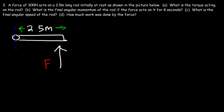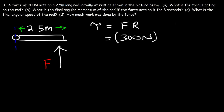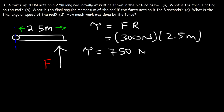Number 3: a force of 300 newtons acts on a 2.5 meter long rod, initially at rest, as shown in the picture below. What is the torque acting on the rod? The torque is the force times the lever arm. The force is 300 newtons and the lever arm, or moment arm, is 2.5 meters. So 300 times 2.5 is 750. The torque is 750 newtons times meters.